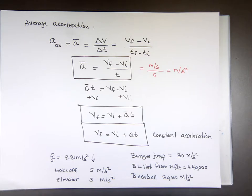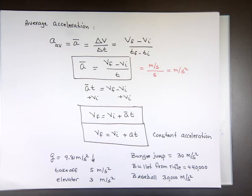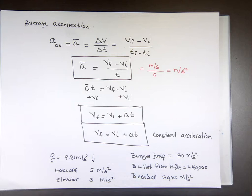The reason I'm throwing these numbers at you is so that as you're doing a problem, don't be surprised if your acceleration is really high. Look at that number: 440,000 meters per second squared. When that bullet leaves the barrel of that rifle, it goes from not moving to a massive speed — around 700 meters per second — so it has to be a large acceleration.